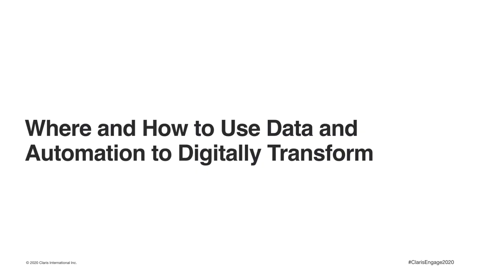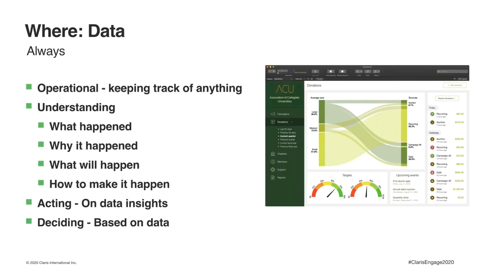We talked about what digital transformation is, what you should and can do with your data to digitally transform, and the ways you can automate. Now let's summarize where and how to use data and automation to digitally transform. For data: operationally, keeping track of anything and understanding what happened, why it happened, what will happen, how to make it happen, and acting on those data insights. According to Gartner, by 2022, 90% of corporate strategies will explicitly mention information or data as a critical enterprise asset and analytics as an essential competency.